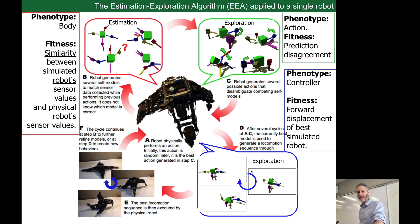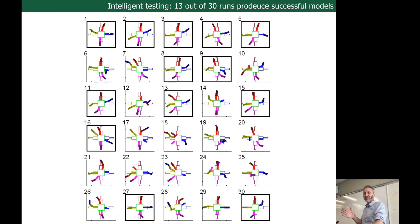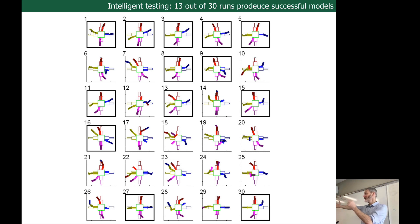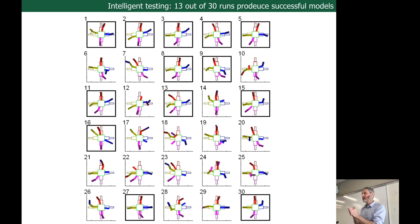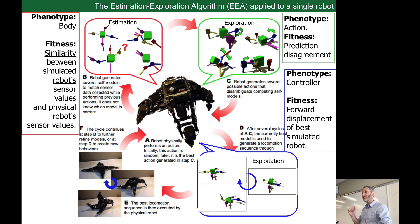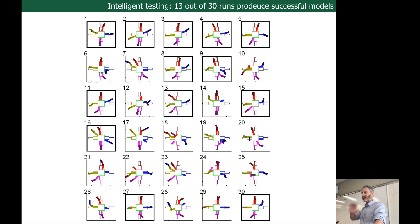That's where the exploration part of this algorithm came from. You don't want a potentially damaged probe randomly thrashing around. You want it to behave very carefully to figure out what's gone wrong, and then, assuming it can diagnose the problem, come up with a compensating controller. With just 16 actions, bouncing back and forth between the estimation and exploration algorithm, how well does the robot do at figuring out how it's put together? We ran this experiment 30 independent times.